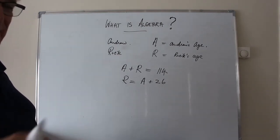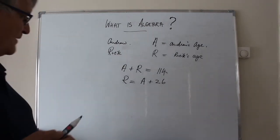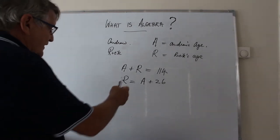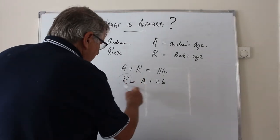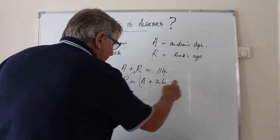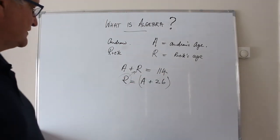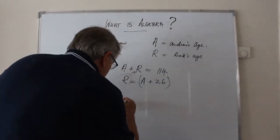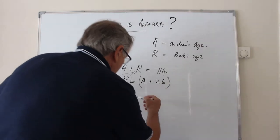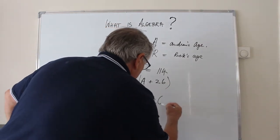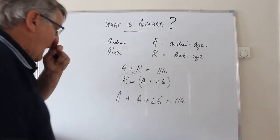Now, I don't need to tell you my age, but let's work out Andrew's age. So instead of r here, I'm going to put in the value a plus 26. So Andrew's age plus a plus 26 is equal to 114.